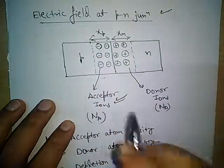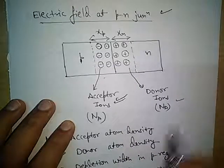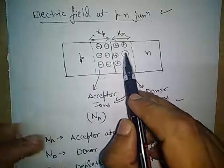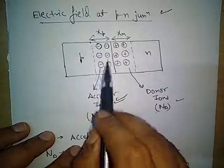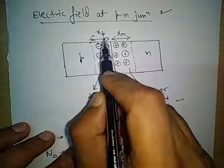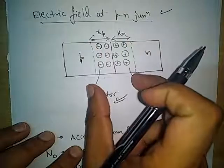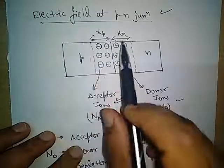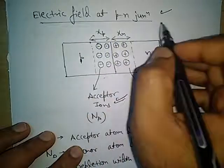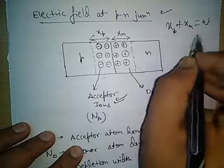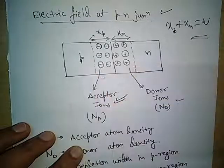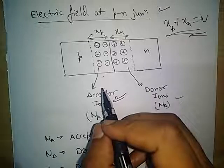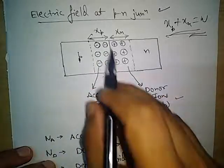Acceptor ions are formed in the p-region and donor ions are formed in the n-region. Donor ions are positive ions because they donate electrons, and acceptor ions are negative ions because they accept electrons. The depletion region width on the p-side is xp and the depletion width in the n-region is xn. When we add these two, we get the overall total depletion width at the p-n junction.